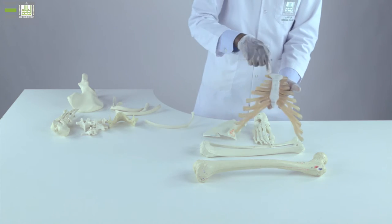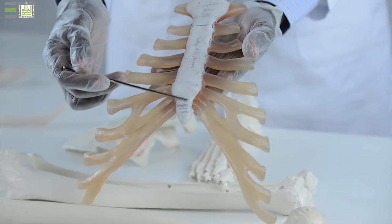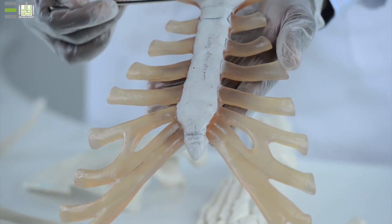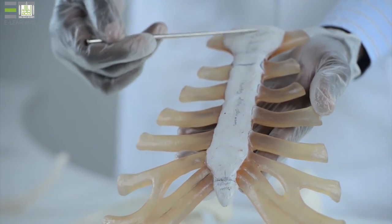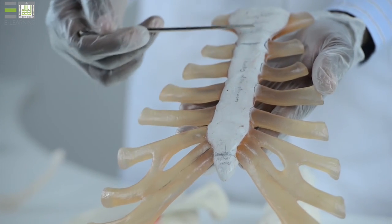Also, the sternum, which is bone within the middle part of the anterior part of our thorax, between the costal cartilages, is a good example of flat bones within our body, with anterior, posterior surface.